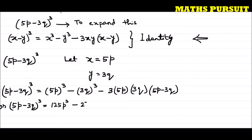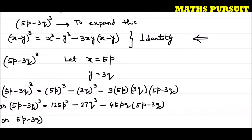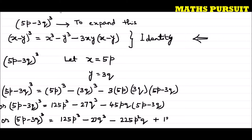5p cubed gives 125p to the power 3. Then 3q to the power 3 gives 27q to the power 3. Then 3 into 5p is 15p, and 15p into 3q is 45pq. Expanding 45pq into (5p minus 3q): 45pq into 5p gives 225p squared q, and 45pq into minus 3q gives minus 135pq squared — so minus minus becomes plus 135pq squared.